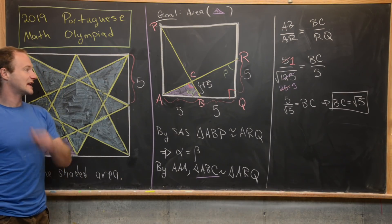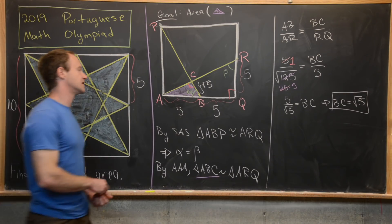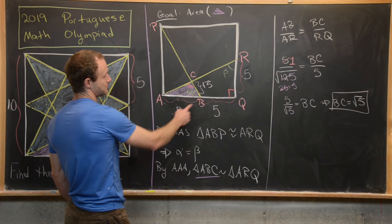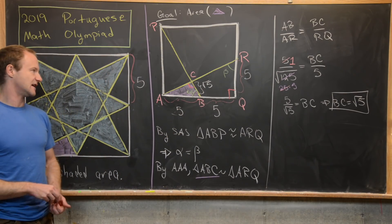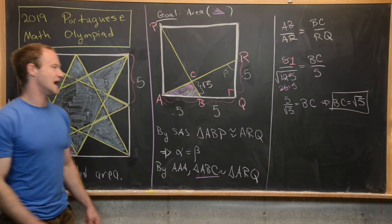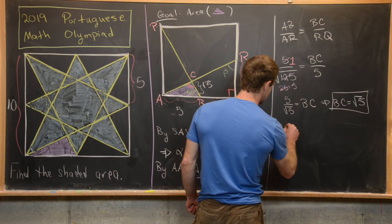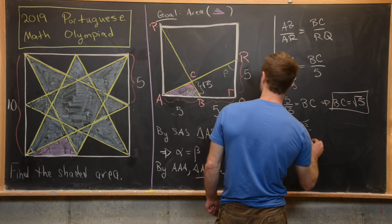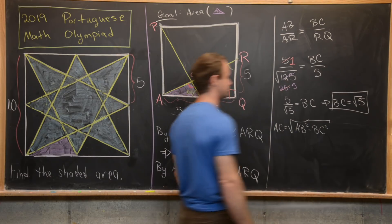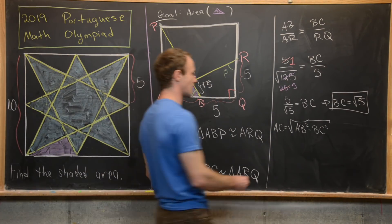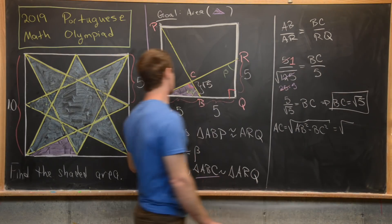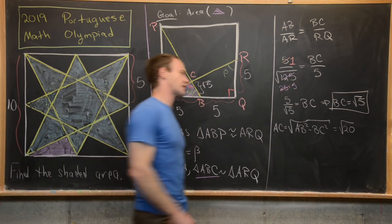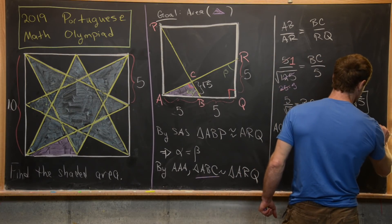Now we calculate AC using the Pythagorean theorem, since the hypotenuse is AB. So AC equals the square root of AB² minus BC² equals the square root of 25 minus 5, which is the square root of 20. Writing 20 as 4 times 5 and factoring out the 4, we get AC equals 2 times the square root of 5.